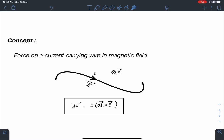So we all know that if there is a current carrying conductor and it is placed in the magnetic field, if we take a small element dl, the force on this small element is given by i dl cross B. This is the formula which we are going to use in solving the problem.